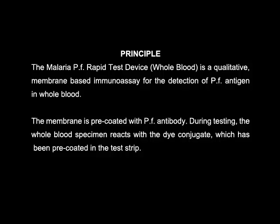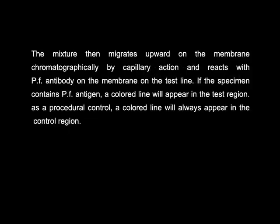During testing, the whole blood specimen reacts with the diconjugate which has been pre-coated in the test strip. The mixture migrates upward on the membrane chromatographically by capillary action and reacts with Plasmodium falciparum antibody on the test line. If the specimen contains Plasmodium falciparum antigen, a colored line will appear in the test region. As a procedural control, a colored line will always appear in the control region.